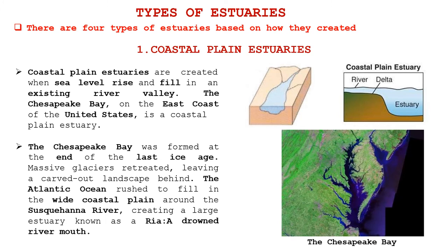There are various types of estuaries and generally there are four types based on how they are created. The first one is the coastal plain estuary. These are created when sea level rises and fills in an existing river valley. The Chesapeake Bay on the east coast of the United States is a coastal plain estuary.